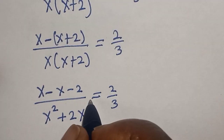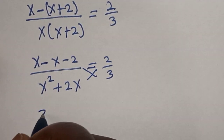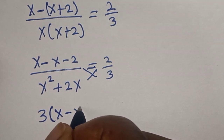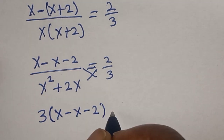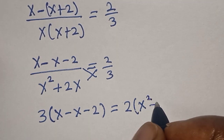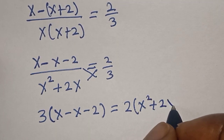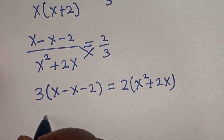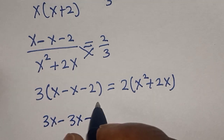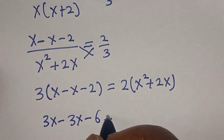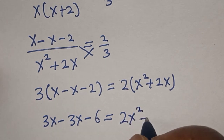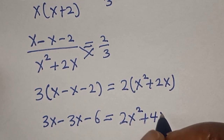Now let's cross multiply. We have 3 bracket x minus x minus 2, is equal to 2 bracket x squared plus 2x. And 3 times x, that is 3x, minus 3 times x, 3x minus 6, is equal to 2 times x squared, 2x squared plus 4x.